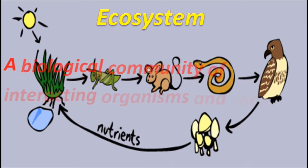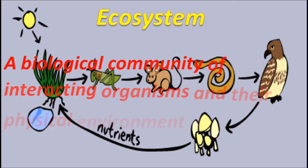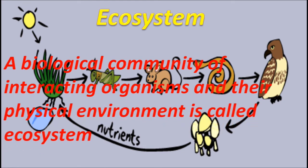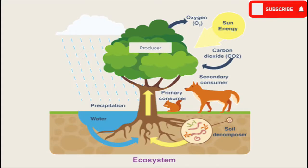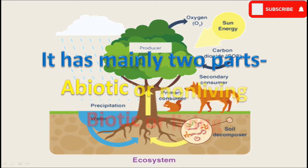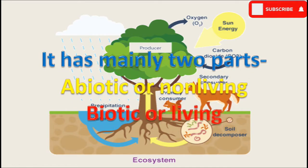Ecosystem: a biological community of interacting organisms and their physical environment is called an ecosystem. It has mainly two parts: abiotic or non-living part, and biotic or living part.